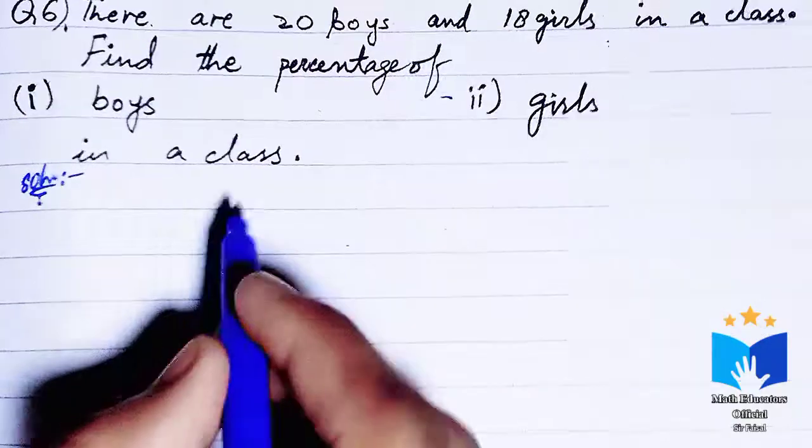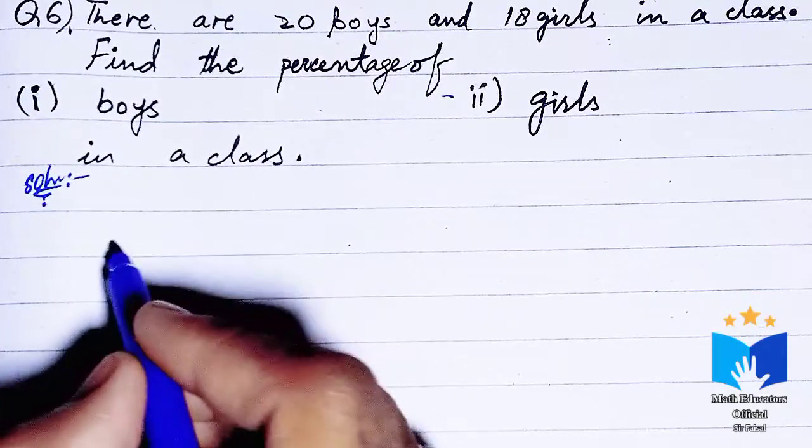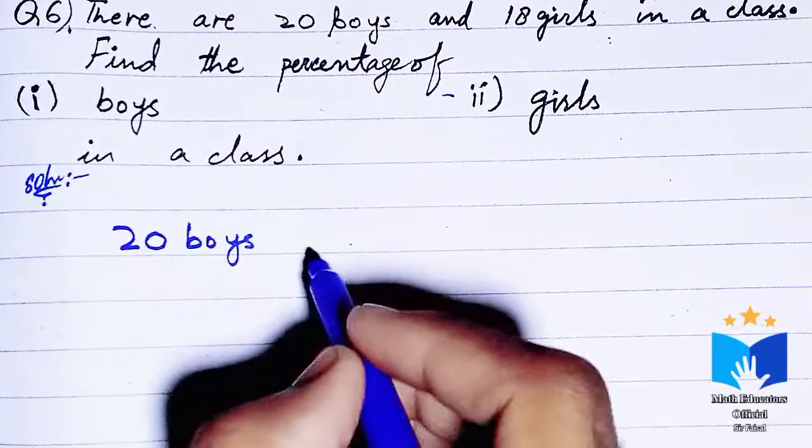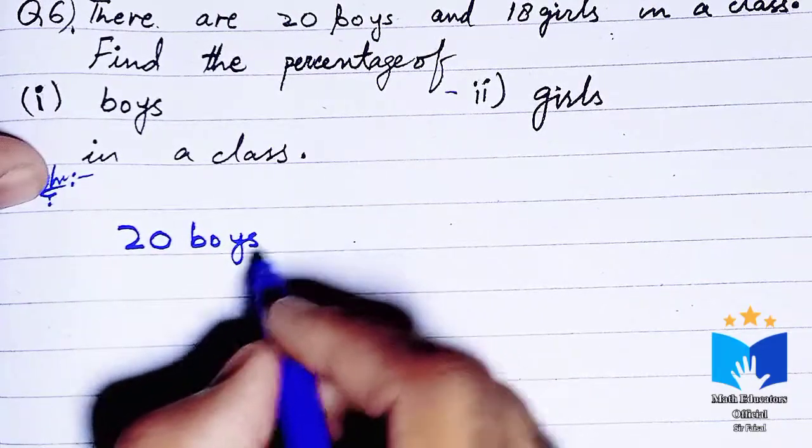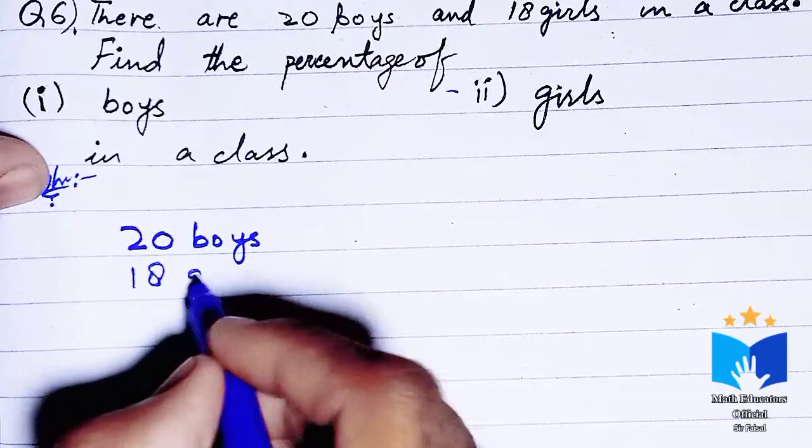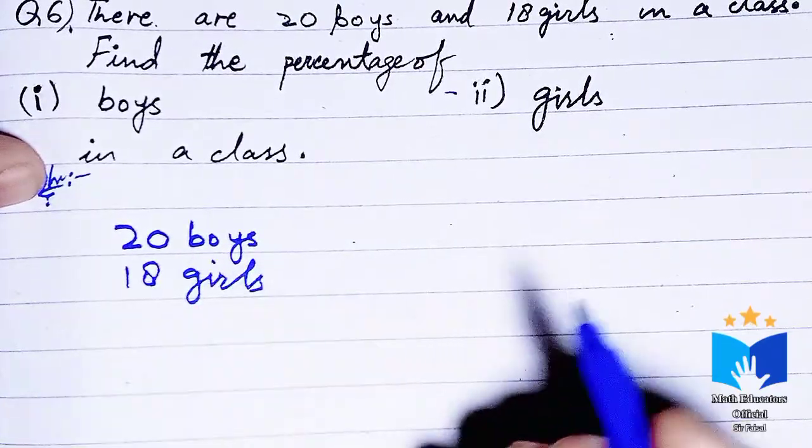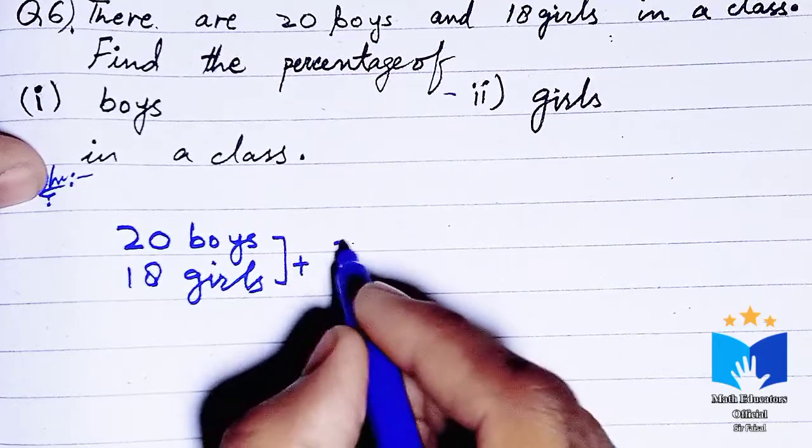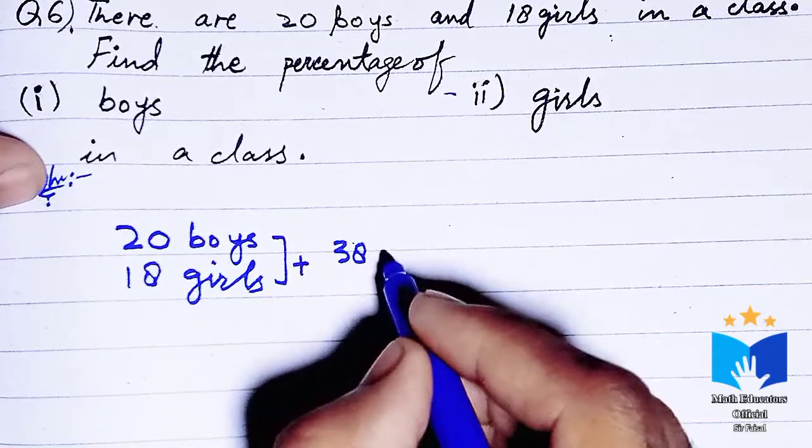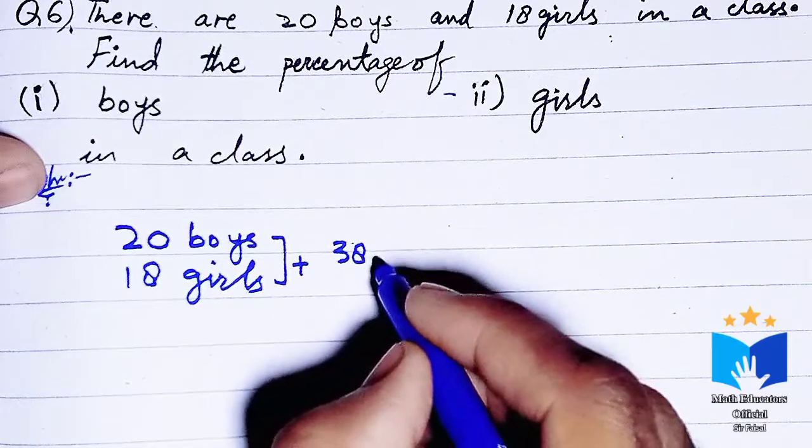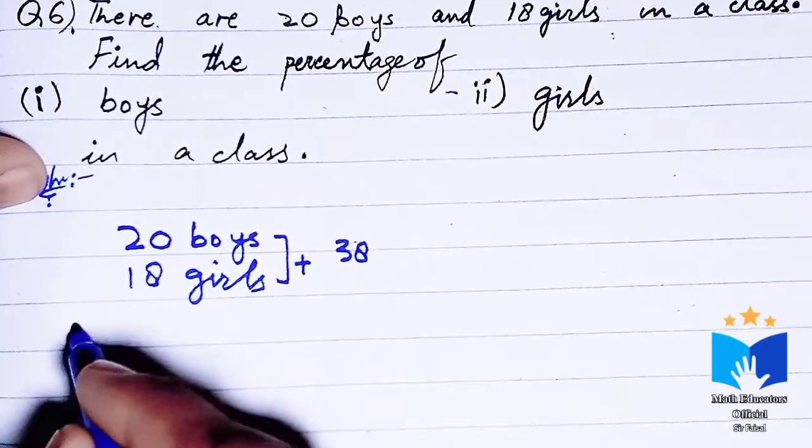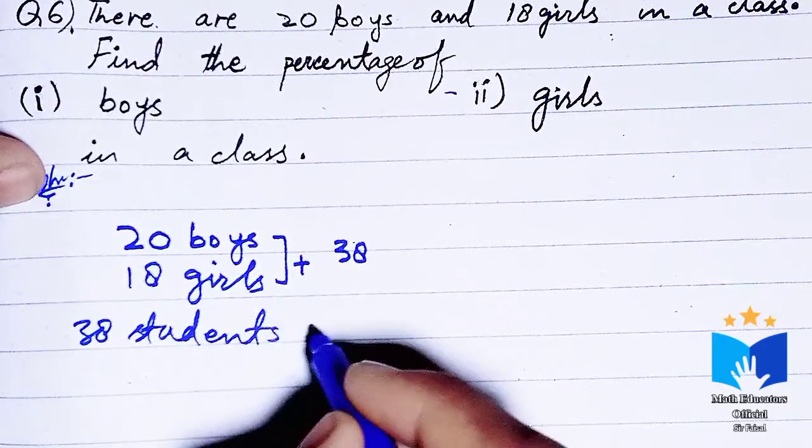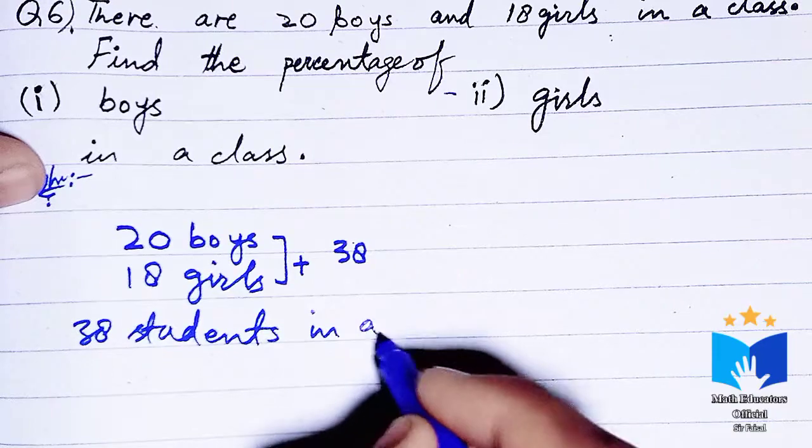First, let's identify what we have - there are 20 boys and 18 girls. When you add these together, 20 plus 18 equals 38 students in the class overall.